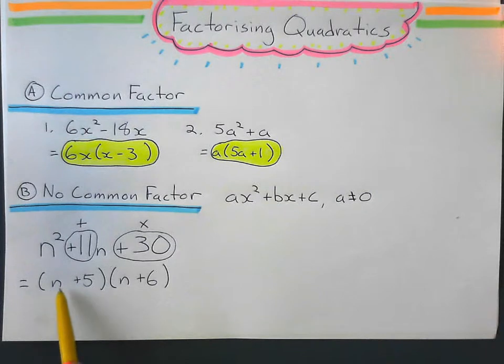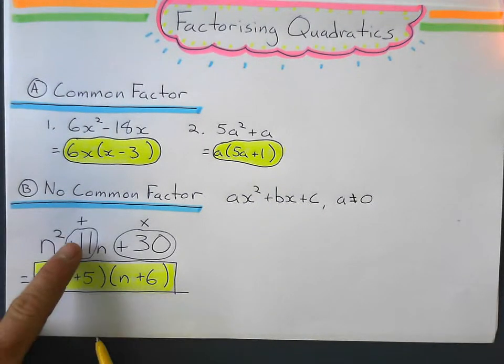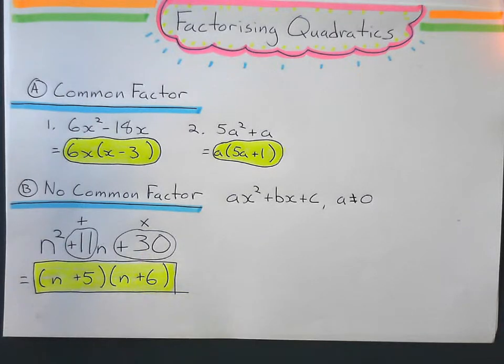To check this, we could expand this out. If we expanded this out, we would get this expression here. Just mental check, 5 plus 6 is 11, 5 times 6 is 30. Let's look at another one.